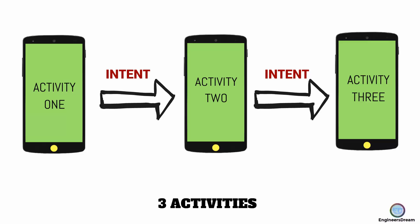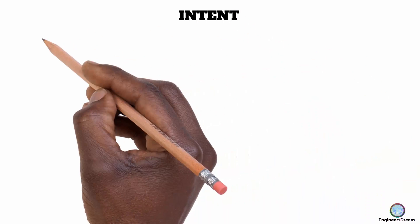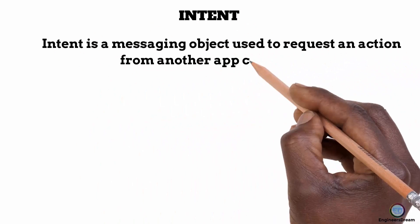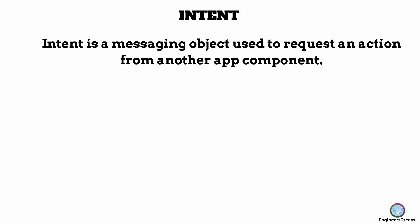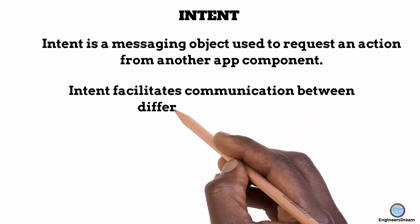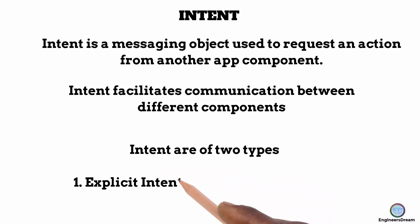After understanding what an activity is, let's talk about intent. An intent is a messaging object you can use to request an action from another app component. Intent facilitates communication between components. Intents are of two types: explicit intent and implicit intent.